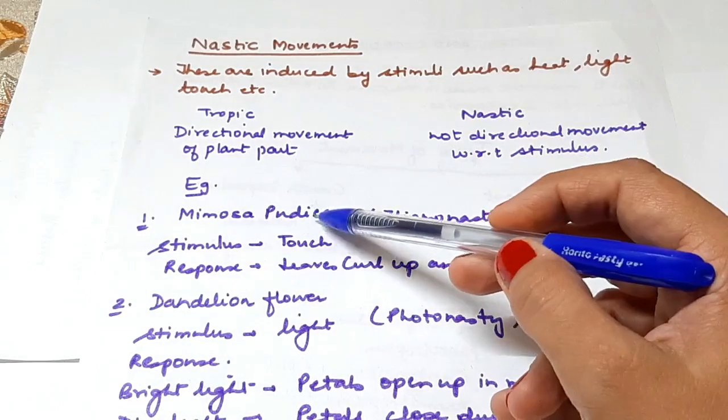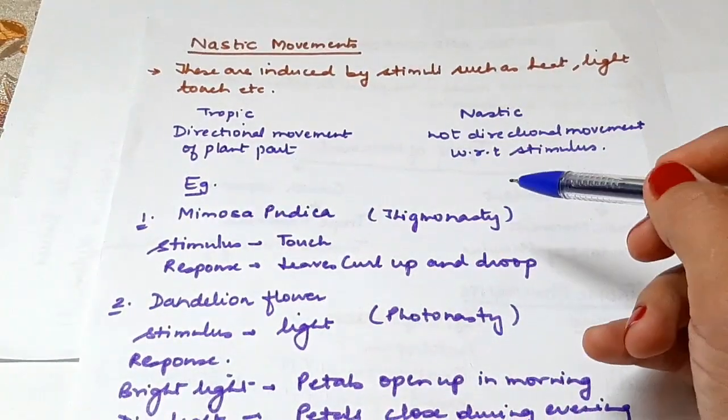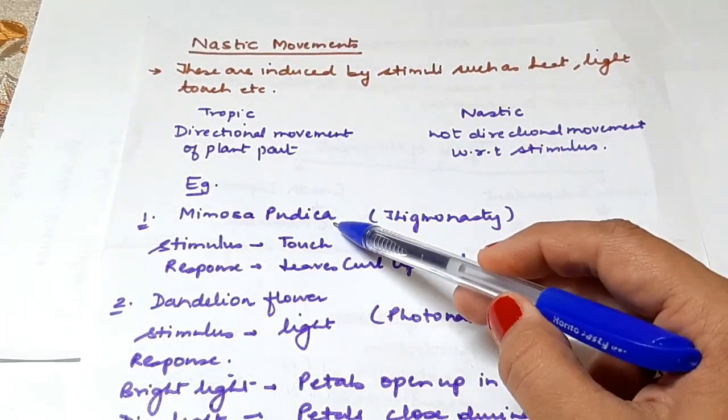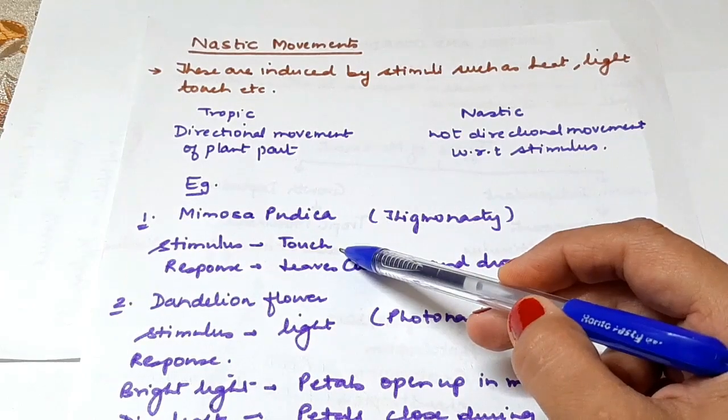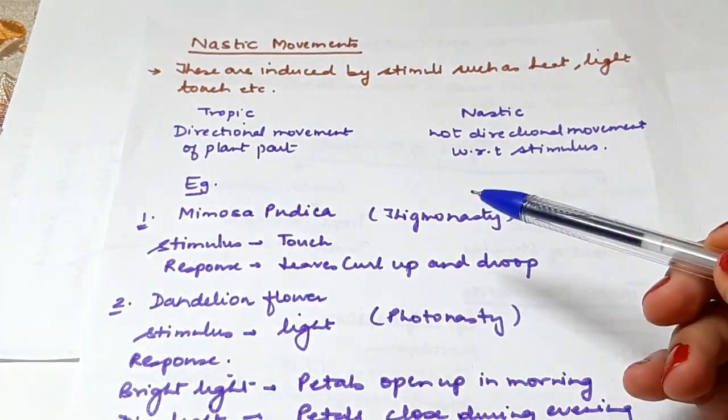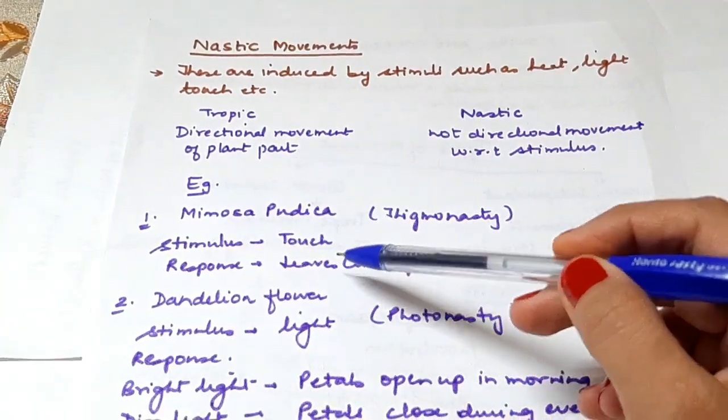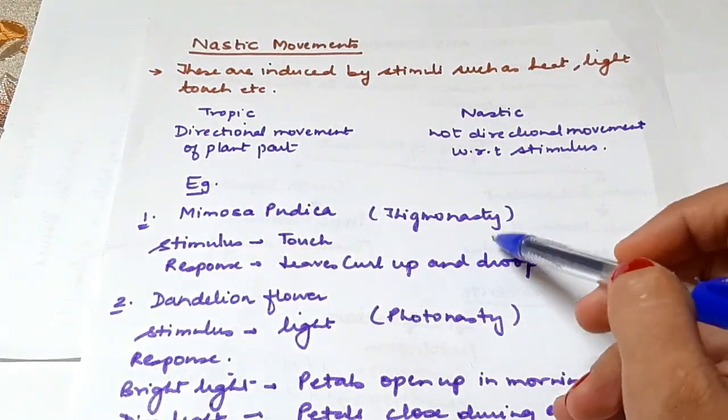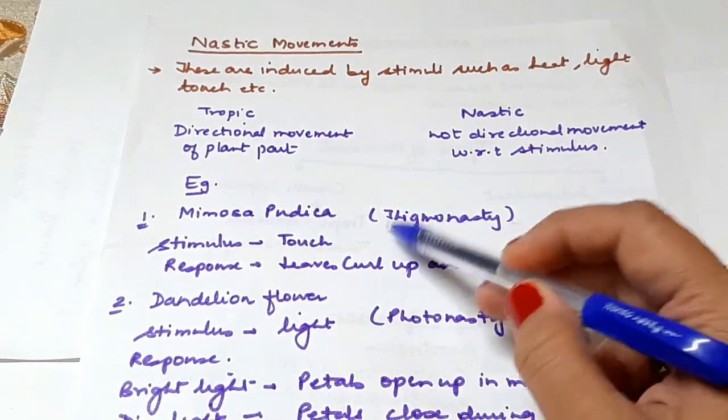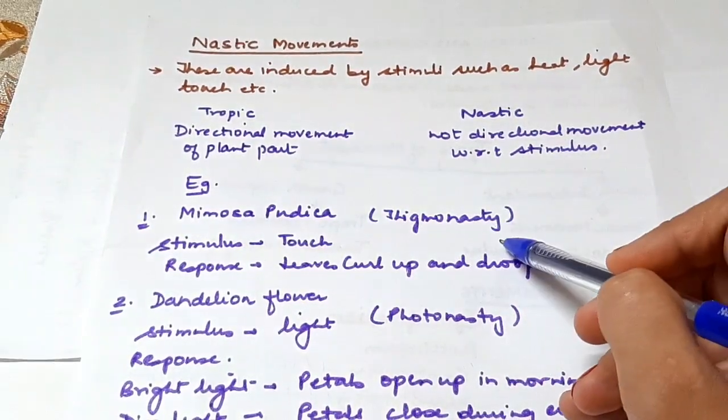An example is Mimosa pudica, the touch-me-not plant. The stimulus is touch. As soon as we touch that plant, the leaves curl up and droop. This is an example of nastic movement, also called thigmonasty - thigmo means touch and nasty refers to nastic movement.